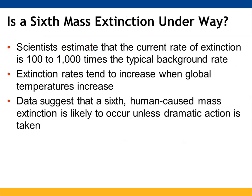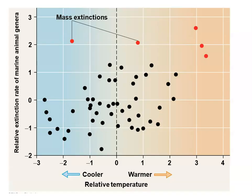Is there a sixth mass extinction underway? The current rate of extinction on Earth is about 100 to 1,000 times the typical background rate. We typically see extinction rates increase when global temperatures increase, and it is thought there will most likely be a sixth one caused by human impact unless significant action is taken. The graph shows where mass extinctions occurred, their impact on temperature, and the relative extinction of marine animals.